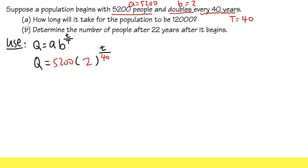So part A, it says how long will it take? So that means the little t we do not know. It says the population, we want it to be 12,000. So that means Q, or you can also use capital P, it doesn't really matter. But let's say Q, which is the quantity of people, which is 12,000.